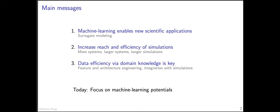I want to make three main points. There are many different ways machine learning can contribute to science, and I want to focus on one particular way: surrogate modeling. That means basically replacing an expensive-to-evaluate function with a machine learning model that is not expensive to evaluate. Second, we have people doing this for potentials — trying to learn the potential energy function of a system — hopefully enabling dynamic simulations of larger systems, perhaps a few thousand atoms instead of a few hundred, and longer simulations, maybe nanoseconds or longer.